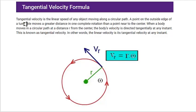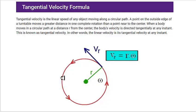The tangential velocity is the linear speed of any object moving along a circular path. A point on the outside edge of the turntable moves a greater distance in one complete rotation than a point near the middle. Hopefully that makes sense — a point out here in one cycle is going to travel a further distance than a point closer to the middle. This is known as tangential velocity.